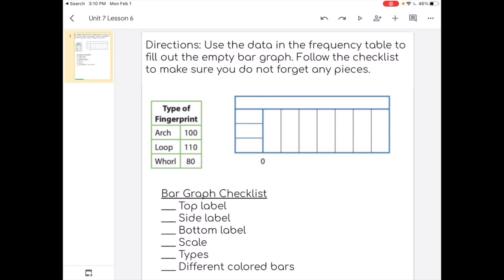Let's look at our bar graph checklist. We need to add a top label, a side label, a bottom label. We need to finish the scale that starts at zero. We need to add the types of fingerprints. So there's three different types. We need to put those into the bar graph. And then we need to add our different colored bars.